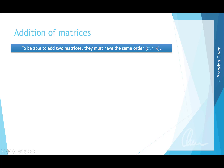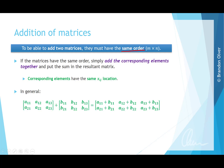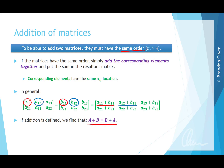To be able to add two matrices, they must have the same order. If they do, we simply add the corresponding elements together and place the sum in the resultant matrix. Corresponding elements share the same IJ location — they're in the same position in each matrix. In general, A11 plus B11 gives the first entry, A12 plus B12 gives the next, and so on. If addition is defined, then A plus B equals B plus A.